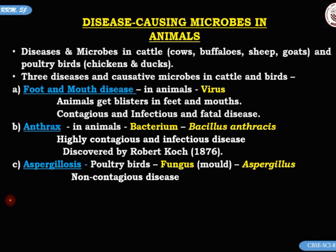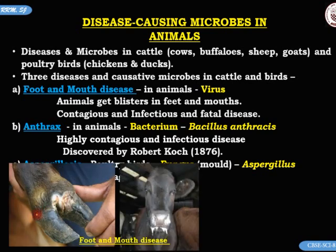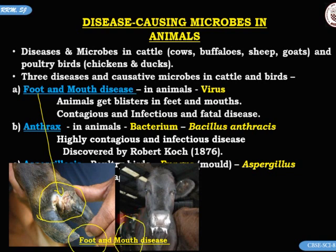The first image shows a blistered foot — a foot blister caused in animals. The animals become lame and find it difficult to walk. The second picture shows a mouth blister in a cow. The cows cannot eat or drink, and eventually become very weak.